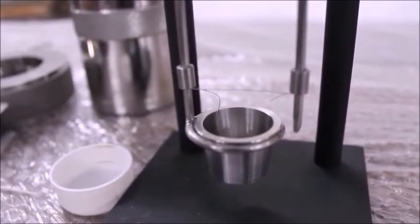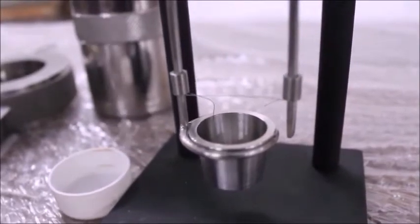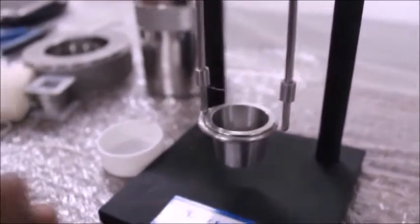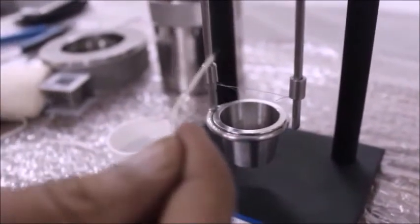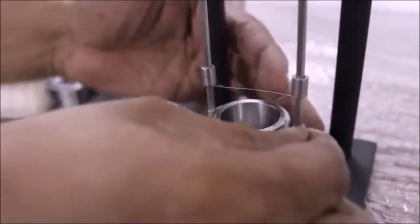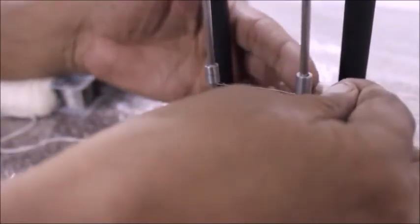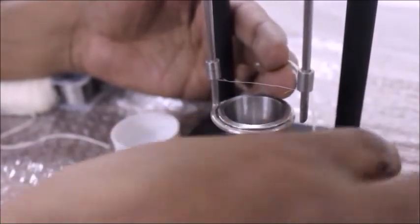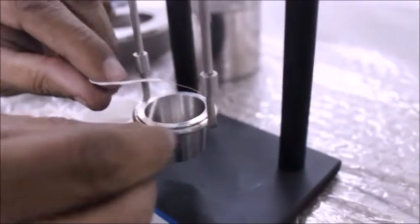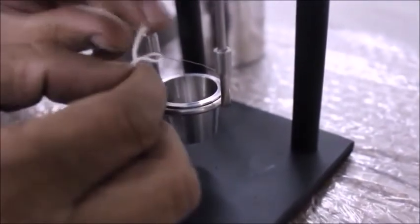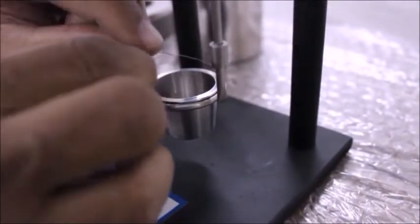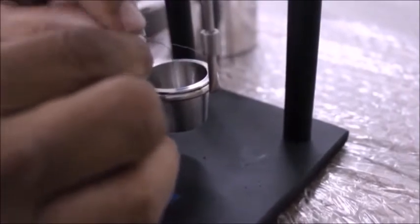Now take the cotton thread and tie a knot around the center of the wire. Make sure that one length is greater than the other.